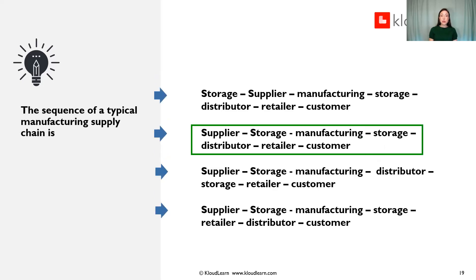The sequence of a typical manufacturing supply chain is which of the following? The answer is B: supplier, storage, manufacturing, storage, distributor, retailer, customer.